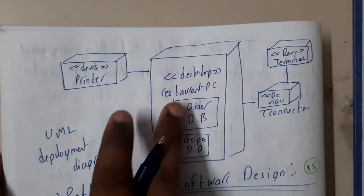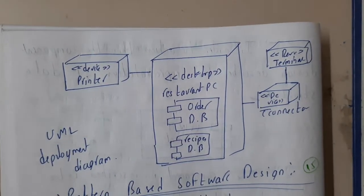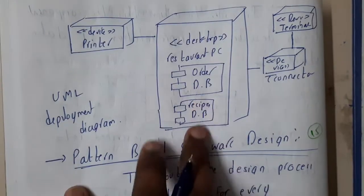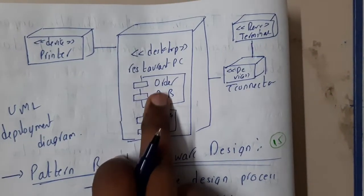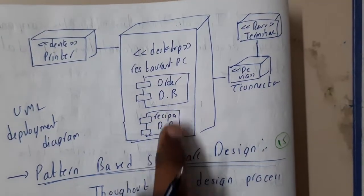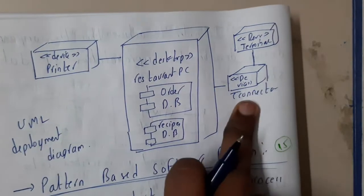If you think this is a desktop application, we wrote the code and substituted the code inside the system. This PC will be a restaurant PC. It has multiple components - one component is order and the other component is receipts. Both are databases and we'll be using a printer to print the bills.